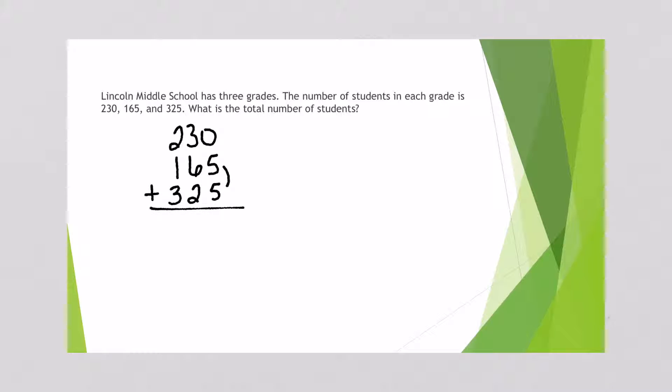So we're going to add up the ones column. 5 plus 5, that's 10. So I'm going to put a 0 right here and I'm going to carry the 1. 1 plus 3 is 4, 4 plus 6 is 10, 10 plus 2 is 12. Carry the 1. 1 plus 2 is 3, 3 plus 1 is 4, 4 plus 3 is 7. So it looks like Lincoln Middle School has 720 students.